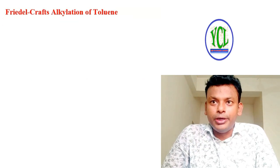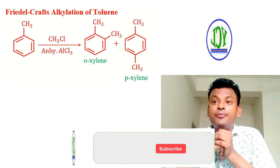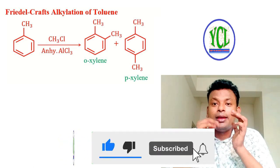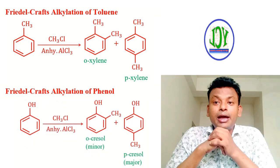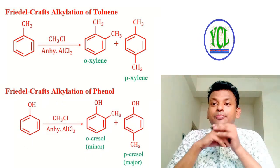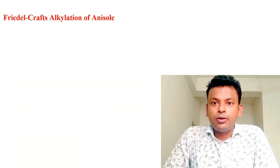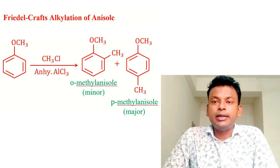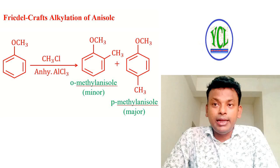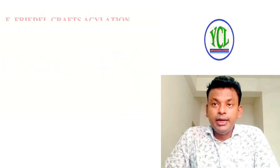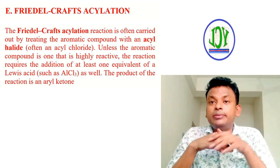Friedel-Crafts alkylation of toluene: toluene + CH₃Cl + anhydrous AlCl₃ → ortho-xylene and para-xylene. Friedel-Crafts alkylation of phenol: phenol + CH₃Cl + anhydrous AlCl₃ → ortho-cresol. Friedel-Crafts alkylation of anisole (aromatic ether): anisole + CH₃Cl + anhydrous AlCl₃ → ortho-methylanisole and para-methylanisole.